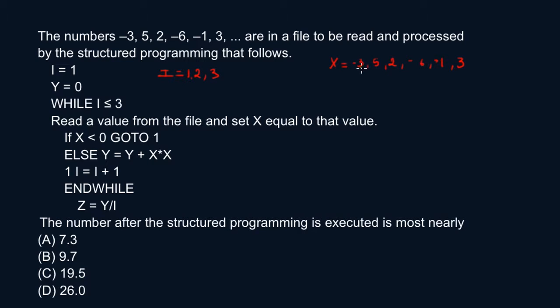Let's start with X. X is minus three. Minus three is less than zero, of course. Therefore, let's go to one. Label one tells me that I equals I plus one, so I is equal to one plus one, which equals two.